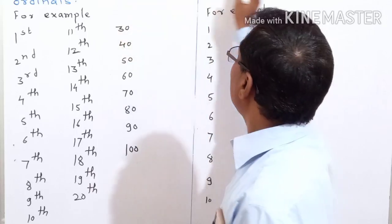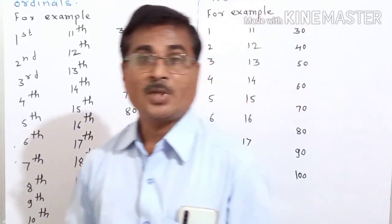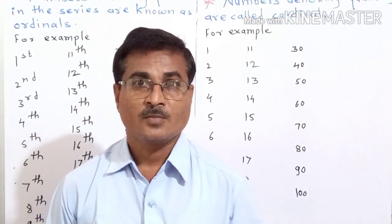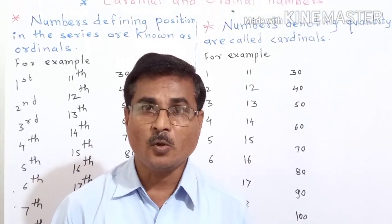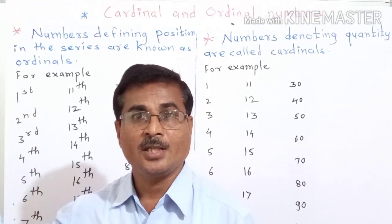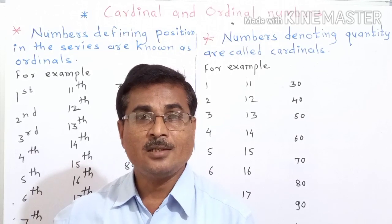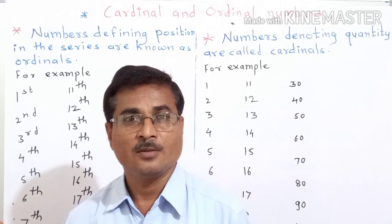These are the cardinals and ordinals. The difference between pronunciation: cardinals you have to read as numbers, and ordinals you have to read like first, second, third, fourth.